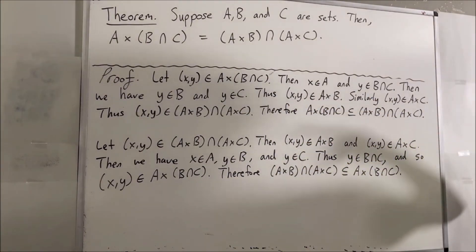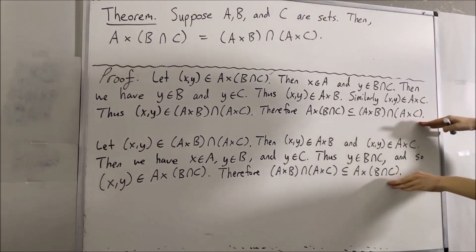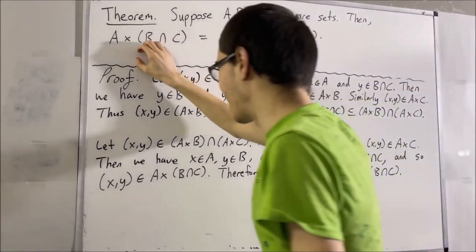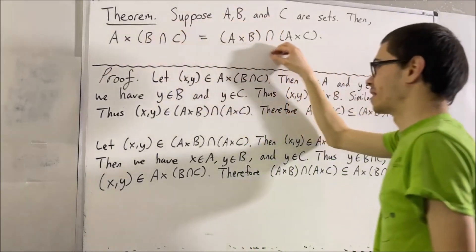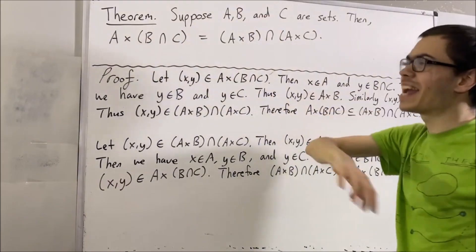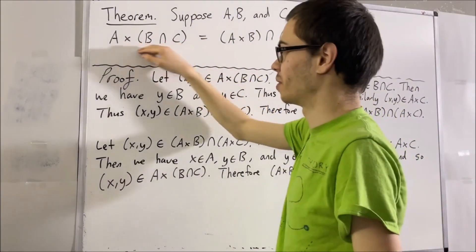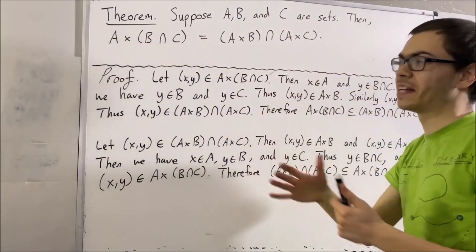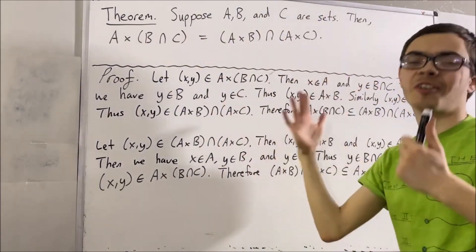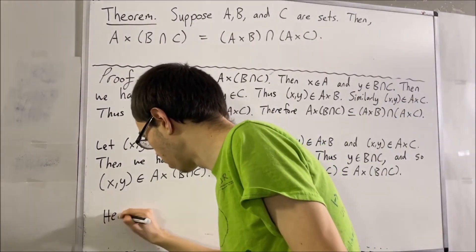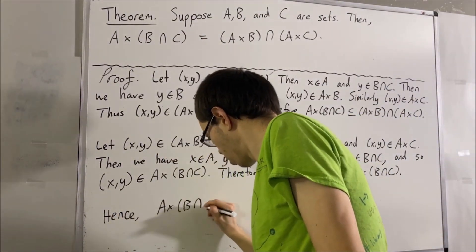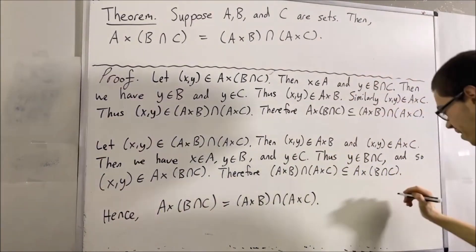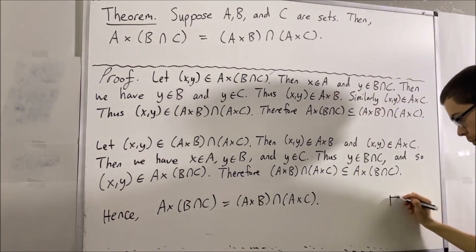And now, notice the two things we have shown here. We have shown that everything in this set is also in this set, and everything in this set is also in this set. And that allows us to say that the sets are equal. And so, this completes the proof.